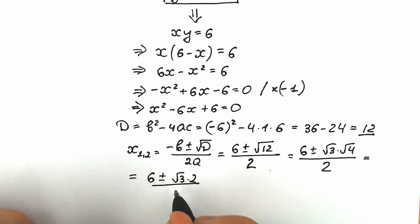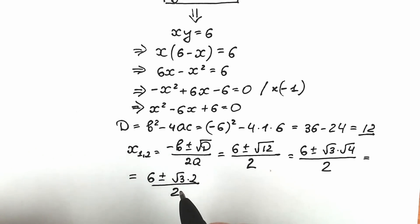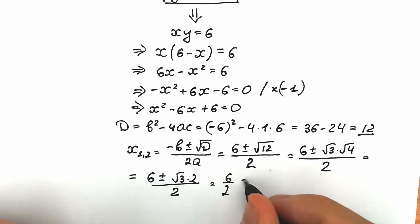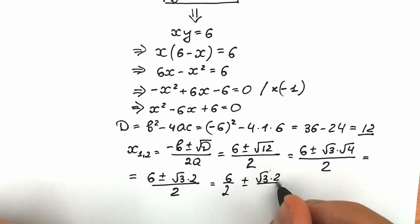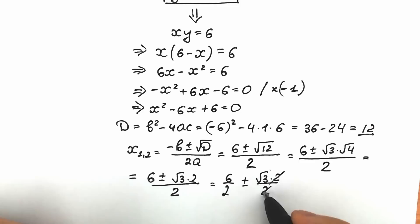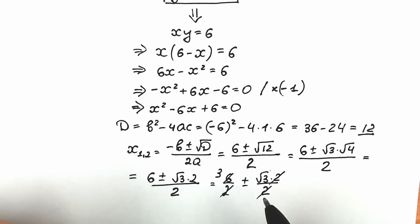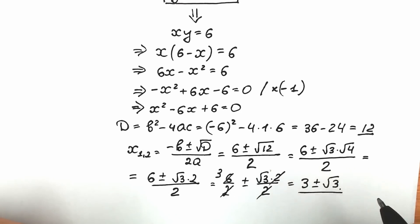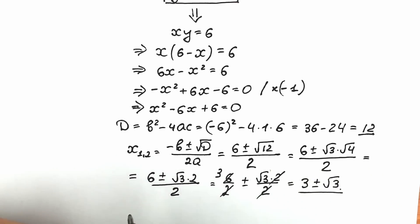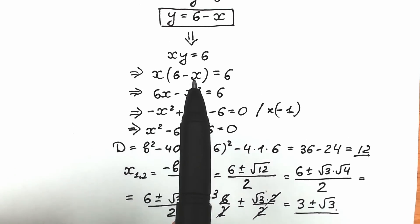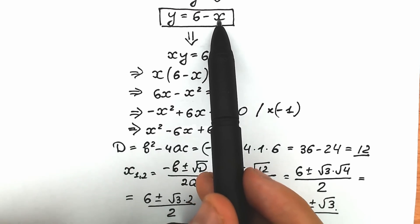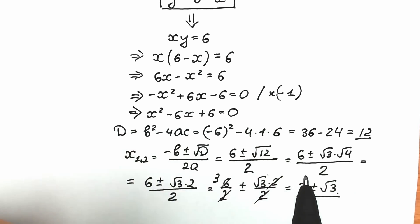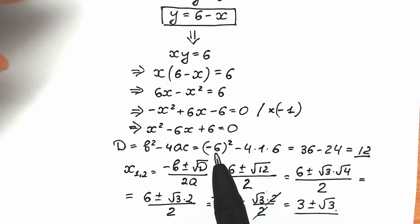So we have 6 plus or minus square root of 3 times 2, divided by 2. We can cancel the 2s, giving us 3 plus or minus square root of 3. These are our real number roots: x₁ equals 3 plus square root of 3, and x₂ equals 3 minus square root of 3.